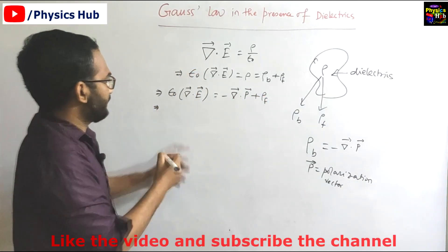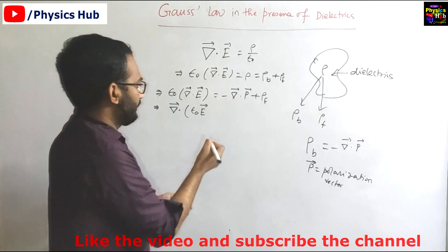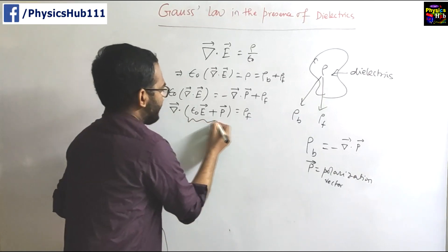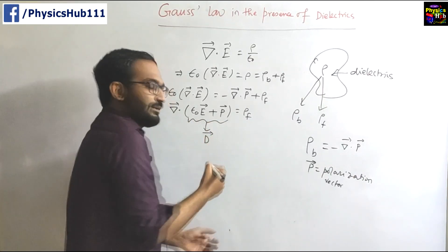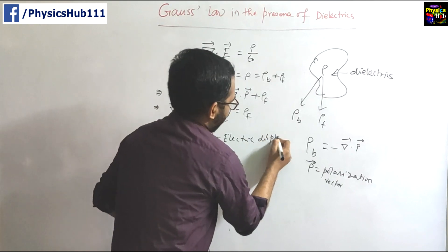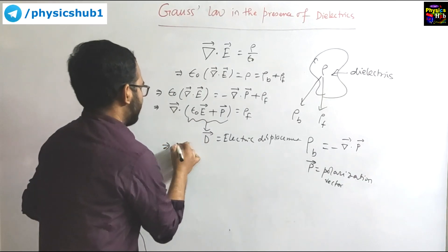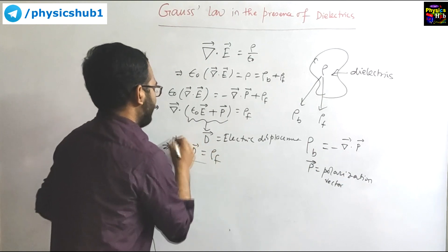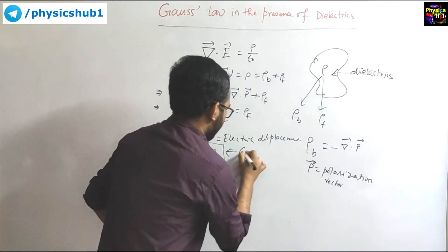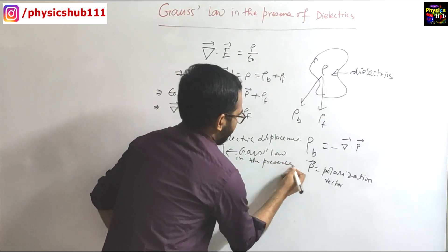If we take divergence as common, we can write: divergence of (epsilon naught E plus P) equals rho_free. This term is identified as another vector D, which is known as the electric displacement. So using this notation our equation becomes: divergence of D equals rho_free. This is the differential form of Gauss law in the presence of dielectrics.